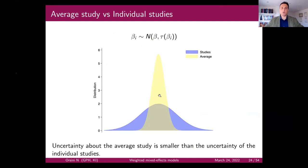A classic figure distinguishes the variation in treatment effect across a population of studies relative to the uncertainty when conducting inference on the average treatment effect.